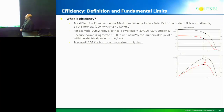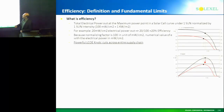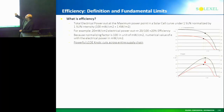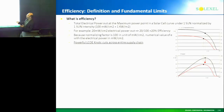One sun intensity is 100 milliwatts per centimeter squared. People interchangeably use efficiency and power. For example, if you have 20 milliwatts per centimeter squared electrical power and normalize by 100 milliwatts, the efficiency is 20%. Because the normalization factor is 100 in units of milliwatts per centimeter squared, the numerical value of efficiency is the same as electrical power. That's why it's interchangeable.